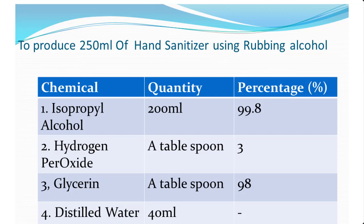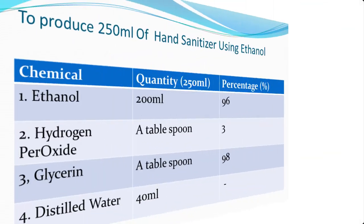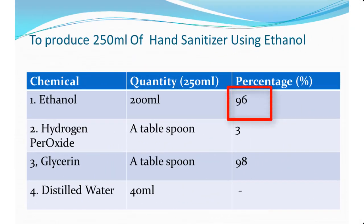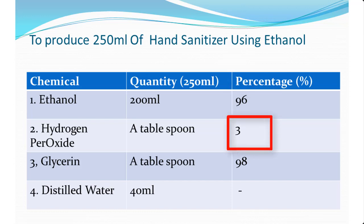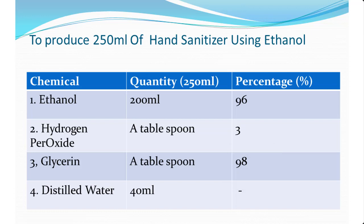Now let's go through another formulation. The first formulation uses isopropyl alcohol, which is one of the most active ingredients. In places where isopropyl alcohol — that is IPA — is not available or scarce, you can use the following materials: ethanol 96%, hydrogen peroxide 3%, and glycerin 98%. In other words, you can use ethanol 96% in place of isopropyl alcohol. If you're using ethanol in place of isopropyl alcohol, make sure that your ethanol is 96% and you're good to go.